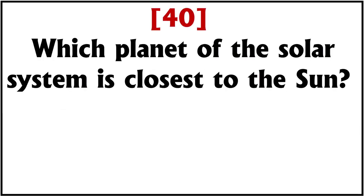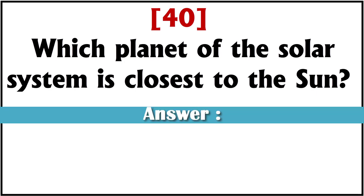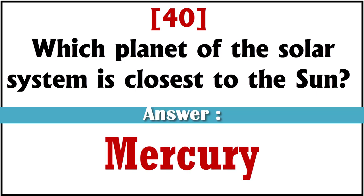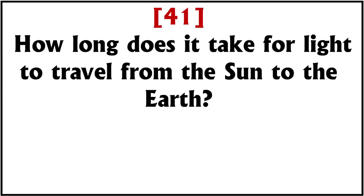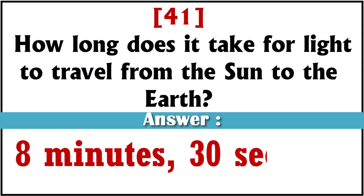Which planet of the solar system is closest to the sun? Mercury. How long does it take for light to travel from the sun to the earth? Eight minutes, thirty seconds.